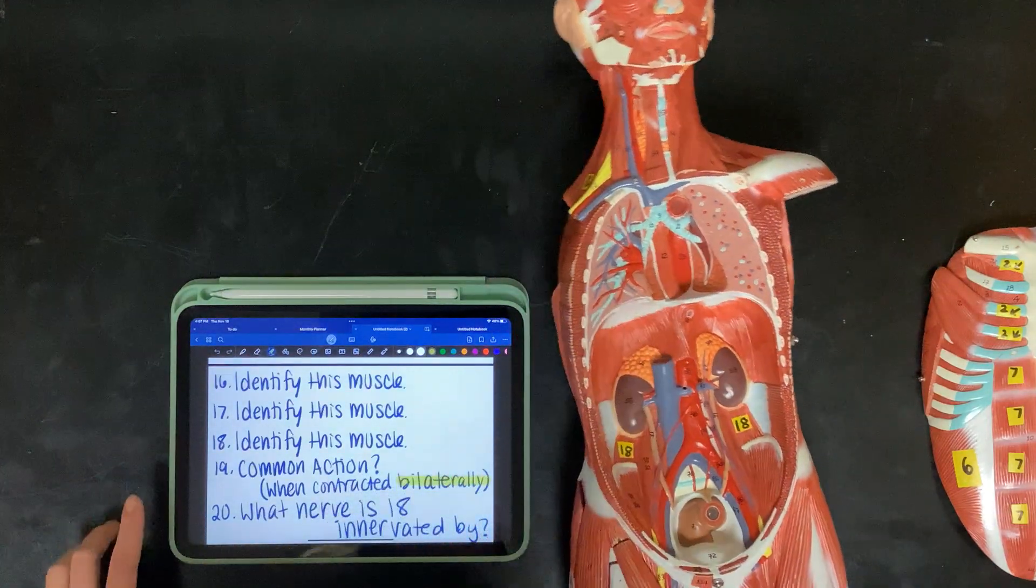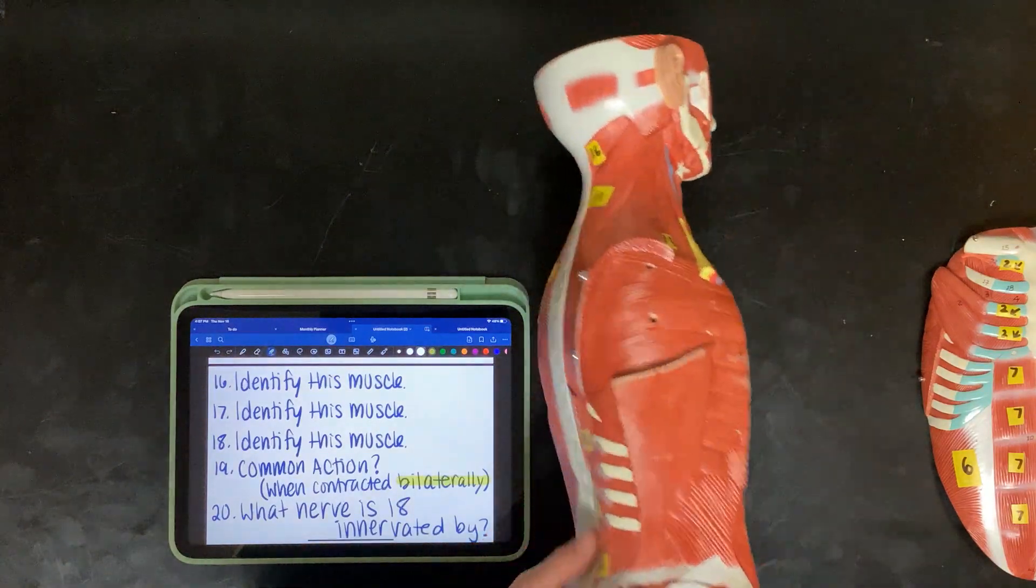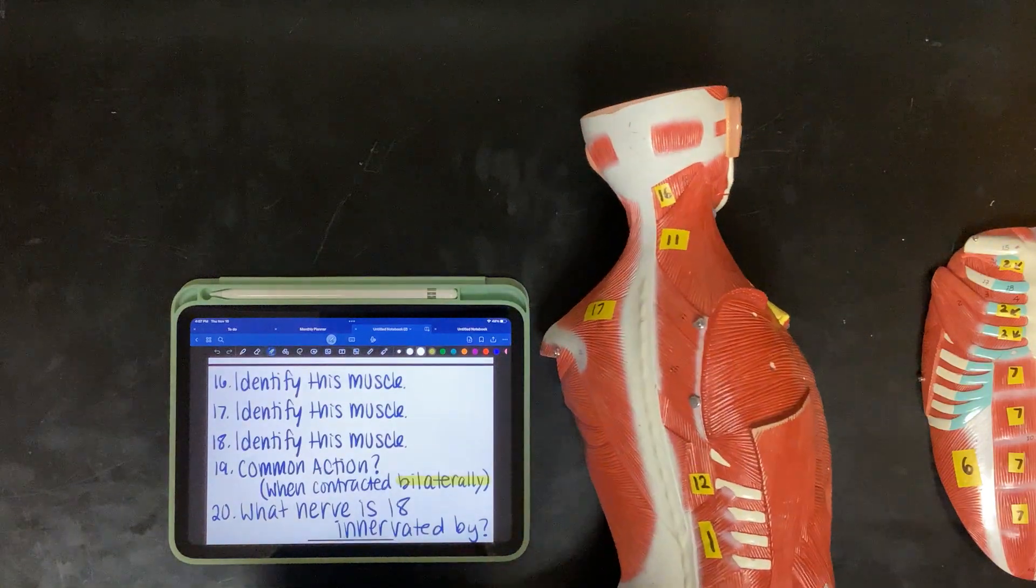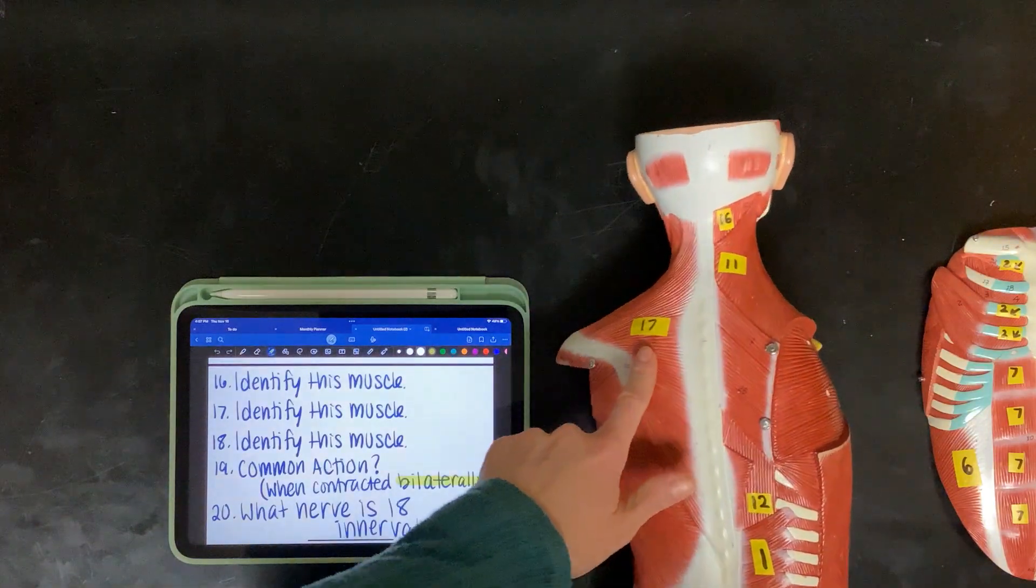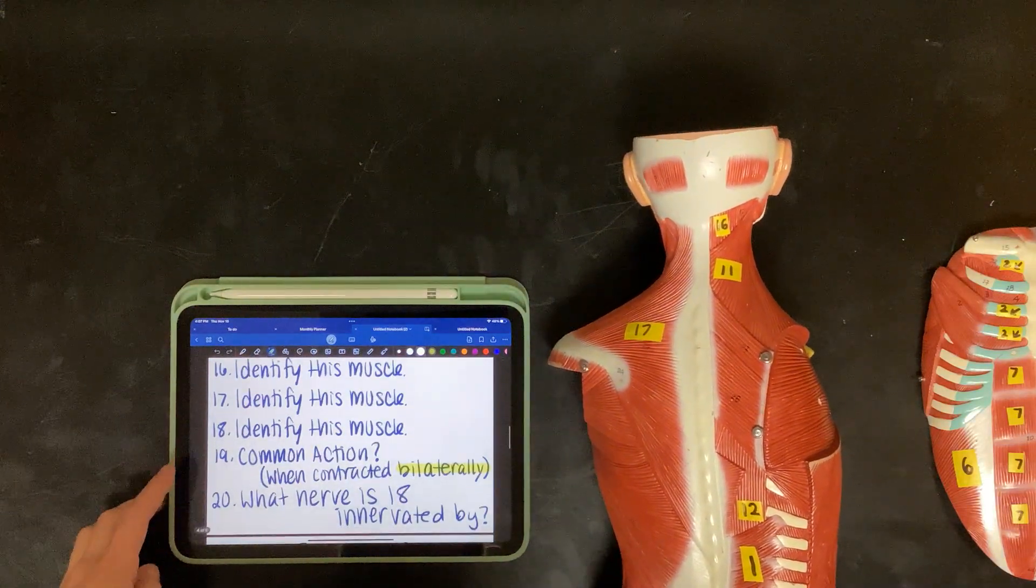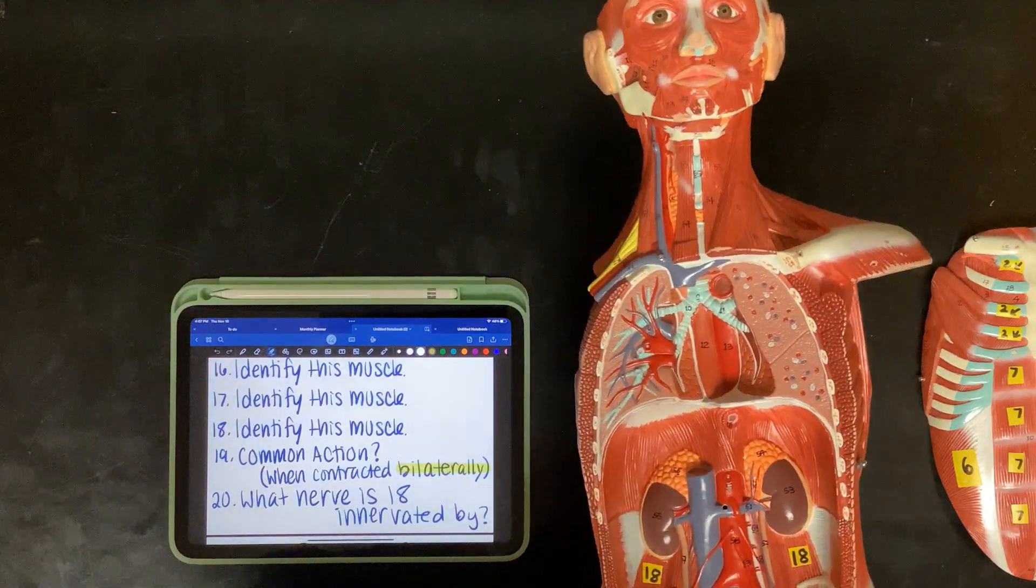Nineteen, what is their common action when contracted bilaterally? Those two with that muscle? And these two. And twenty is asking, what nerve is eighteen innervated by? So what innervates this muscle?